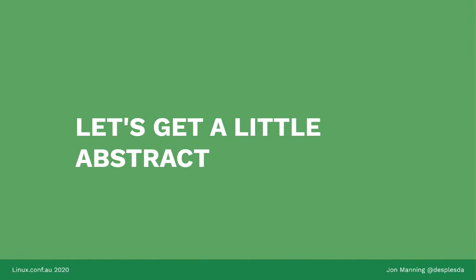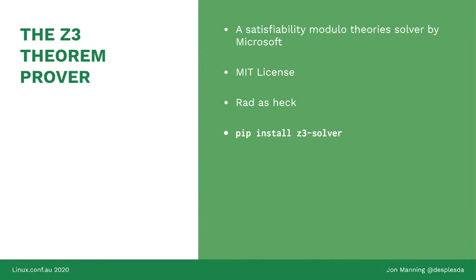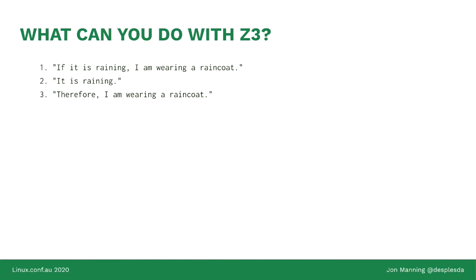Let's get slightly more abstract. We can go to Z3. Z3 is an open source project from Microsoft — it is a satisfiability modulo theories solver that is really cool. I don't understand most of it but I do know how to use enough of it. And you can install it using pip.